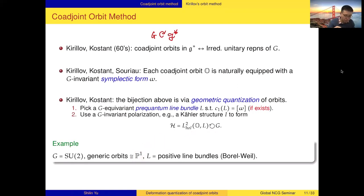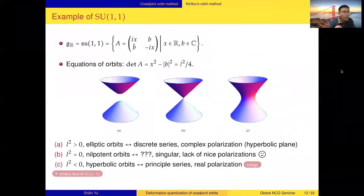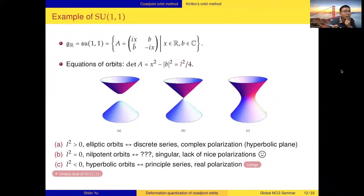Orbit method has success in the compact group case, and also in the case of nilpotent groups and some solvable groups. Kirillov and Kostant showed the orbit philosophy works nicely. Sometimes instead of a complex polarization you can take a real polarization, for example in the nilpotent group case. Geometric quantization works well in all these cases. But the difficult part is when we pass to non-compact reductive groups, for example SU(1,1). We can write down the Lie algebra, consisting of two-by-two matrices of a specific form, and analyze all the coadjoint orbits.